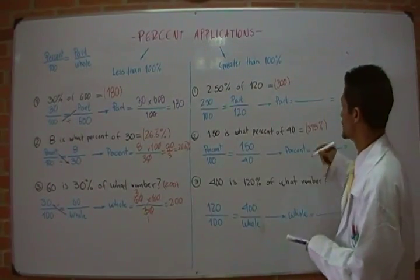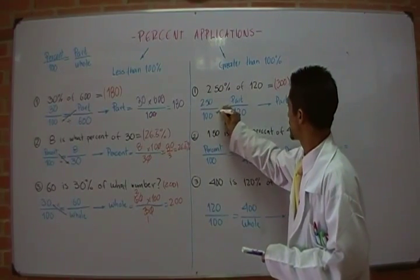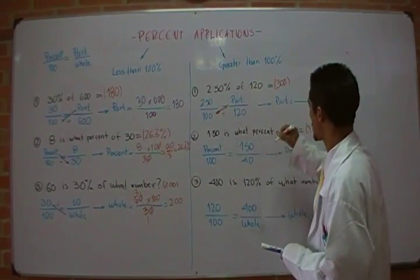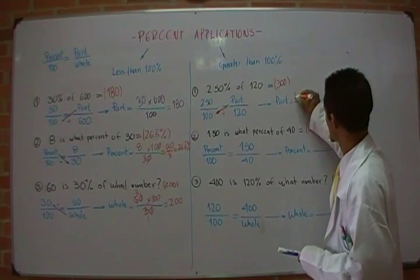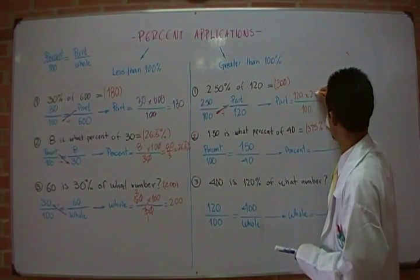Percent is related to 100, as part is related to whole. So I'm going to divide by 100 in this case, since it is in diagonal from the unknown quantity. So 100 goes here, 120 times 250.